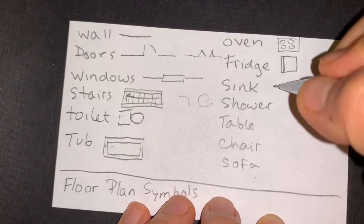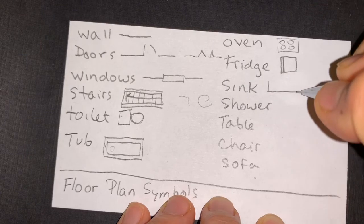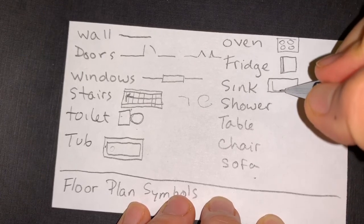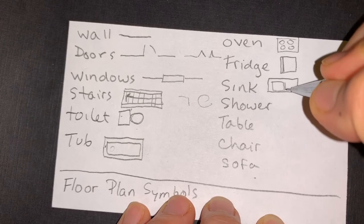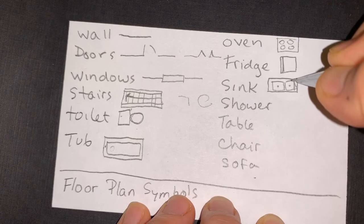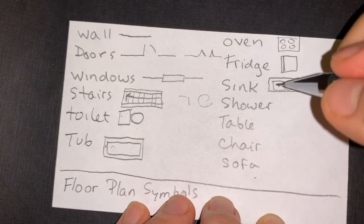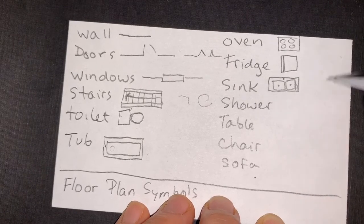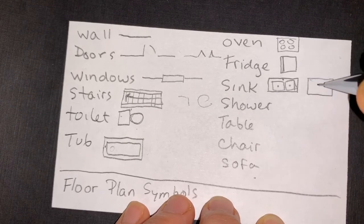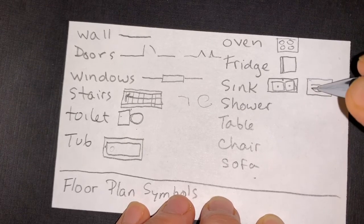A sink. Depending on the style of sink, you can have like a kitchen sink that's partitioned off like that with the drains, and of course where the faucet is. Or you could do a kitchen or bathroom sink that's maybe more oval, showing where the faucet is and the drain.